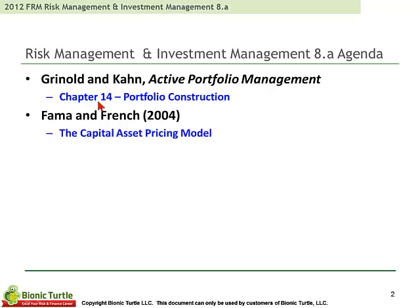The Grinold Chapter 14 remains from prior years. GARB appears to be winnowing down or reducing the amount of Grinold. Last year we had Chapter 14 and another difficult Chapter 17. That Chapter 17 was eliminated. What's left is Chapter 14 on portfolio construction.